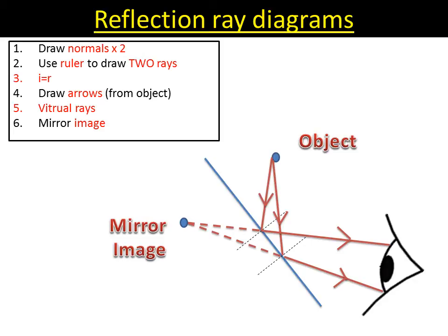And it should be the same distance from the mirror as the object is. So if the object is two meters away from the mirror, the mirror image will be two meters back from the mirror, a total of four meters away from the object.